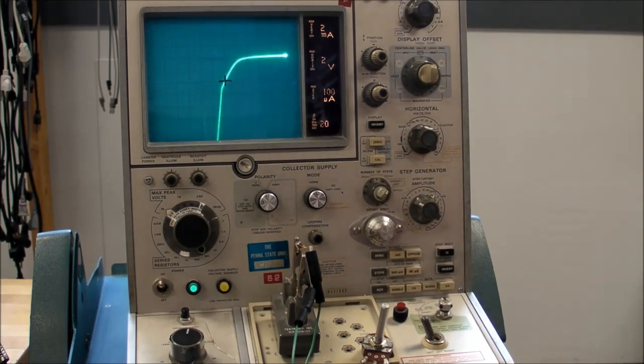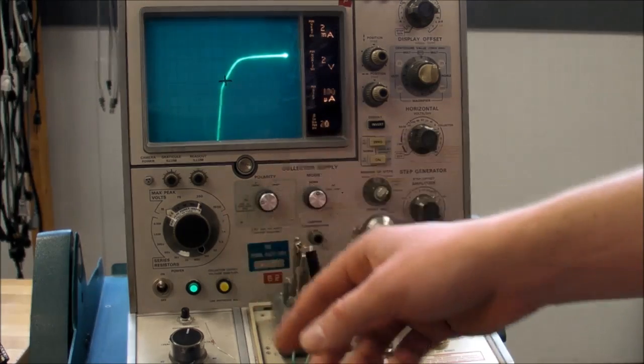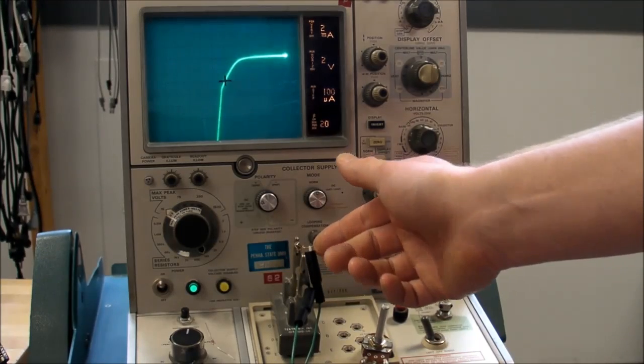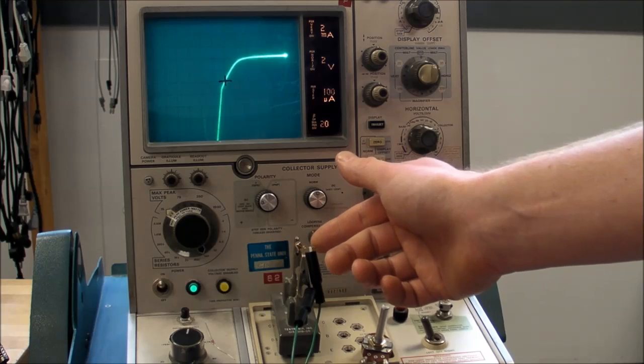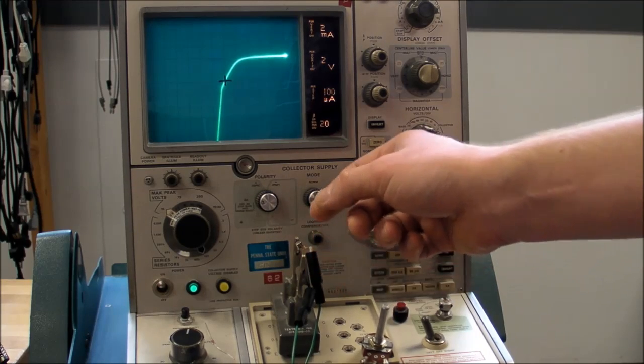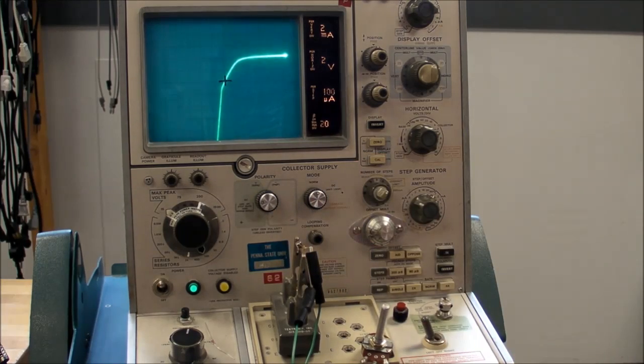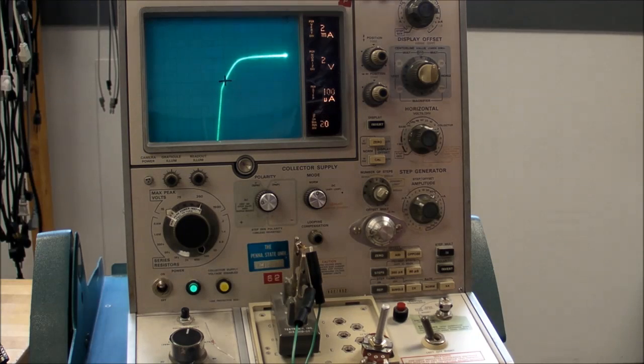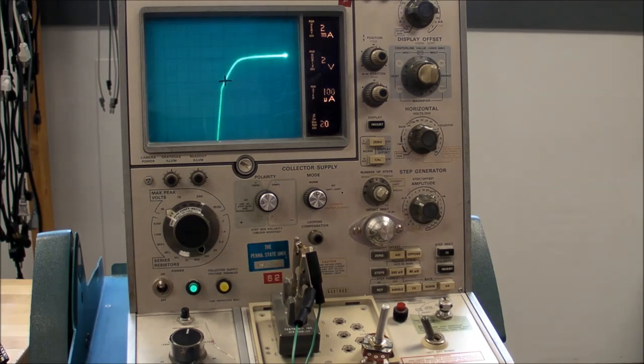Oh, and I just thought of this right now. One other application is you could use the current limiting device to charge a capacitor with a nice ramping voltage instead of the typical exponential rise that you would get with a resistor. If you want to charge a capacitor at a very precise rate, then you can always use current limiting device.